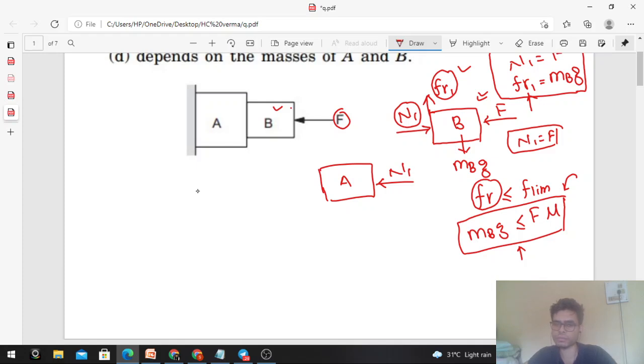If we do the same thing for block A, when you draw the free body diagram, its weight is acting downward, MA into G. Further, there will be a normal reaction between this wall and block A. So let's call it N2. N2 is acting on it. And now, the friction on block A by block B will be acting downward, because on block B it was upward. So by Newton's third law, we can say that on block A, the friction is acting downward, FR1.